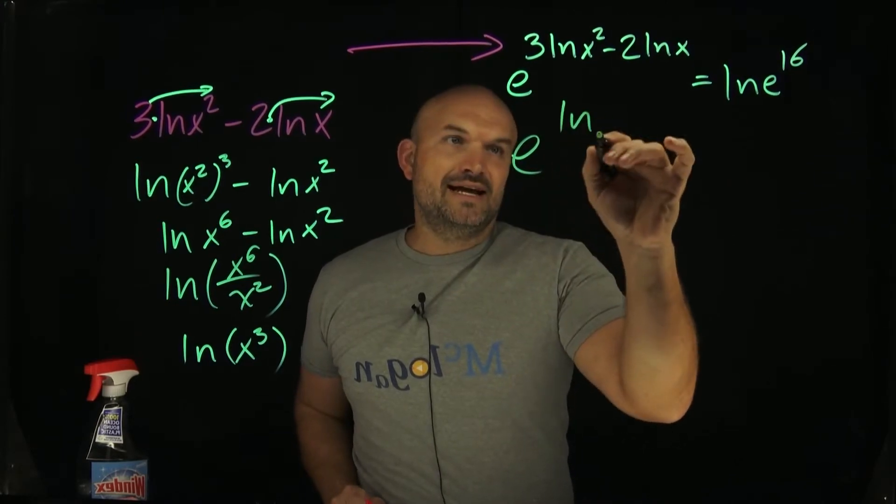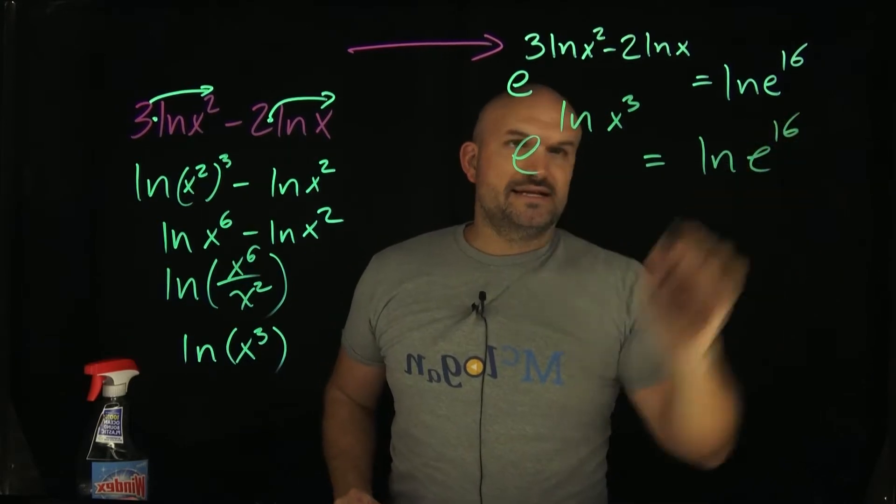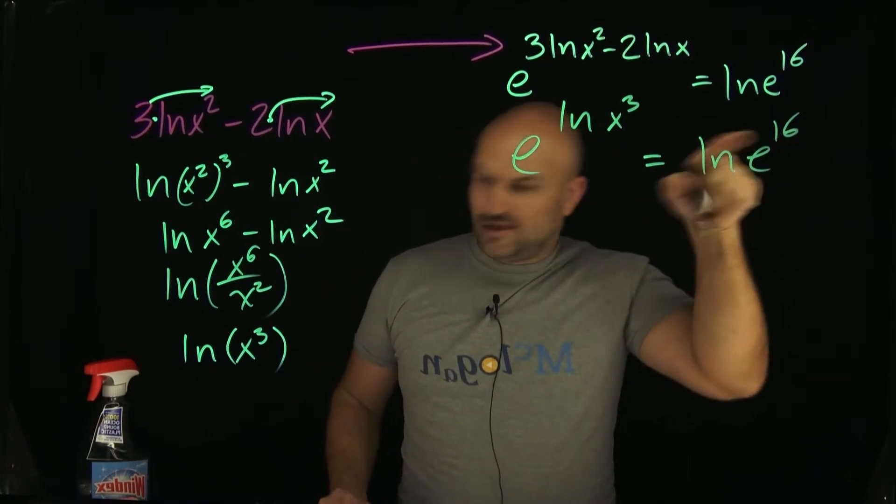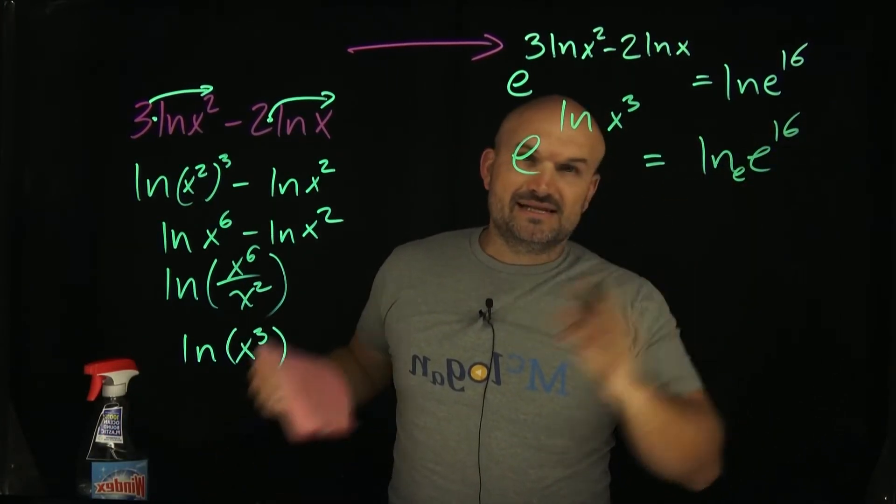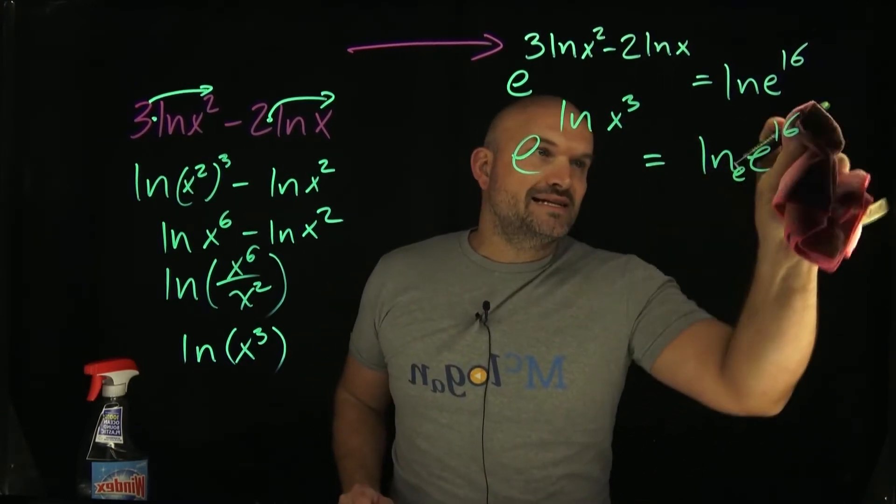So we have e raised to the ln of x cubed equal to ln e to the 16th property. Okay, so actually before I even write that in there, I think hopefully you can recognize that when you have ln of, remember that has a base e of e raised to the 16th power, that is another logarithmic property here. We can just simplify that to 16.